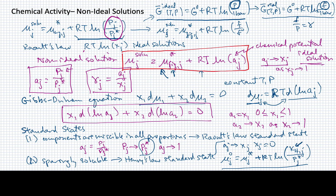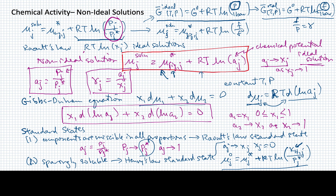The main point is that we're going to be using activity as opposed to pressure for a lot of things in the coming lessons, particularly when we get to the issue of chemical equations and chemical reactions. Activity is basically converting us from an ideal solution to a non-ideal solution in a seamless way.